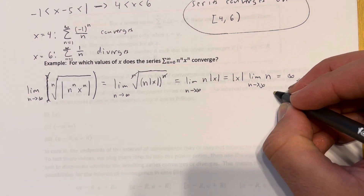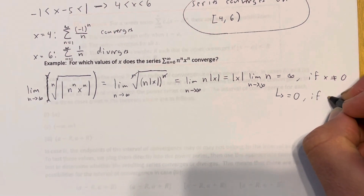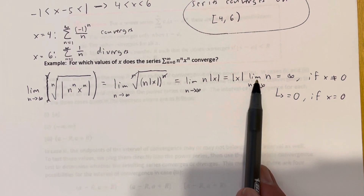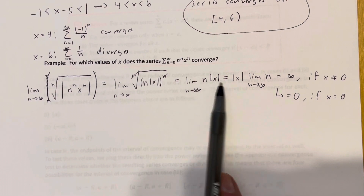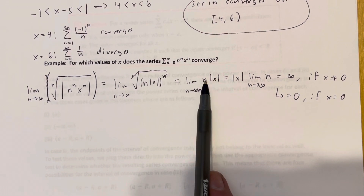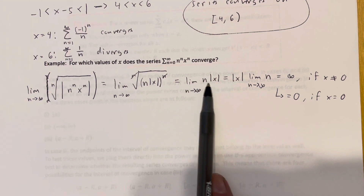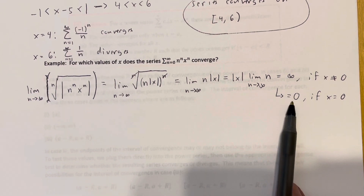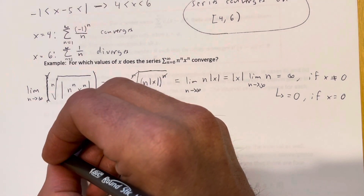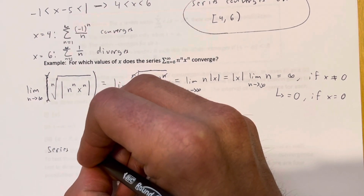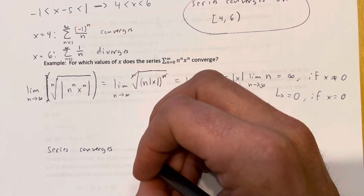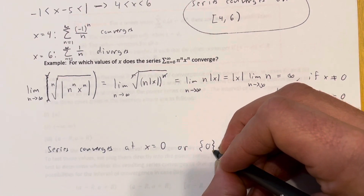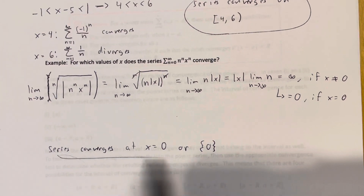But if x equals zero, then we're multiplying the limit by zero, so the result is zero, which is less than one. The root test says the series converges only at x equals zero. So the series converges at x equals zero — sometimes written as the set {0}.